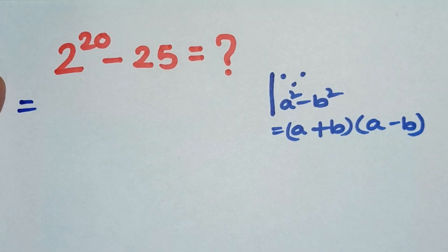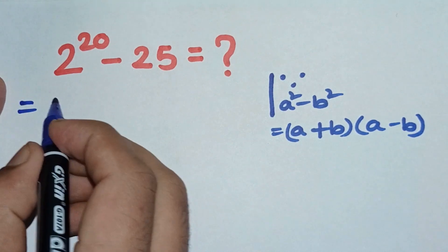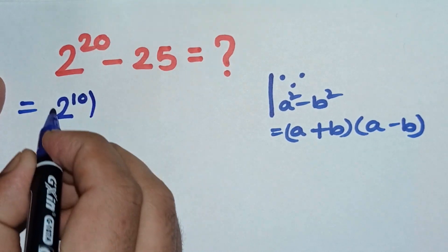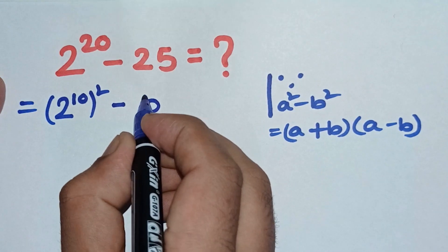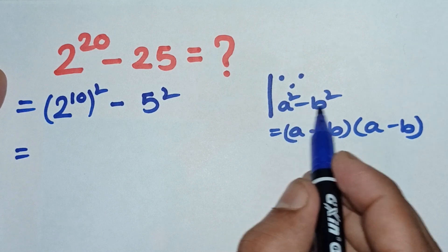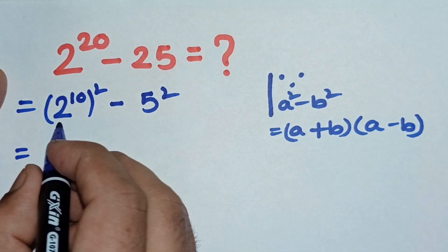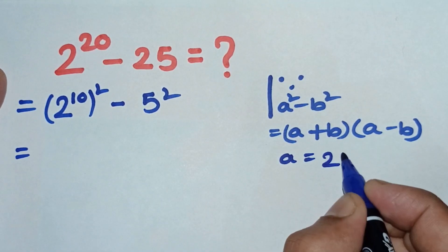Hi everyone, how can I solve 2 to the power 20 minus 25? Let's start. We can write 2 to the power 20 as 2 to the power 10 bracket squared minus 25 as 5 squared. We know a formula: a squared minus b squared equals a plus b into a minus b.